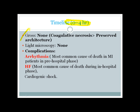In the timeline of 0 to 4 hours, there are no gross or microscopic changes, because coagulative necrosis preserves architecture early on. The most common complications in the first 4 hours are arrhythmia — the most common cause of pre-hospital death in MI — followed by heart failure, the most common cause of in-hospital death, and cardiogenic shock.